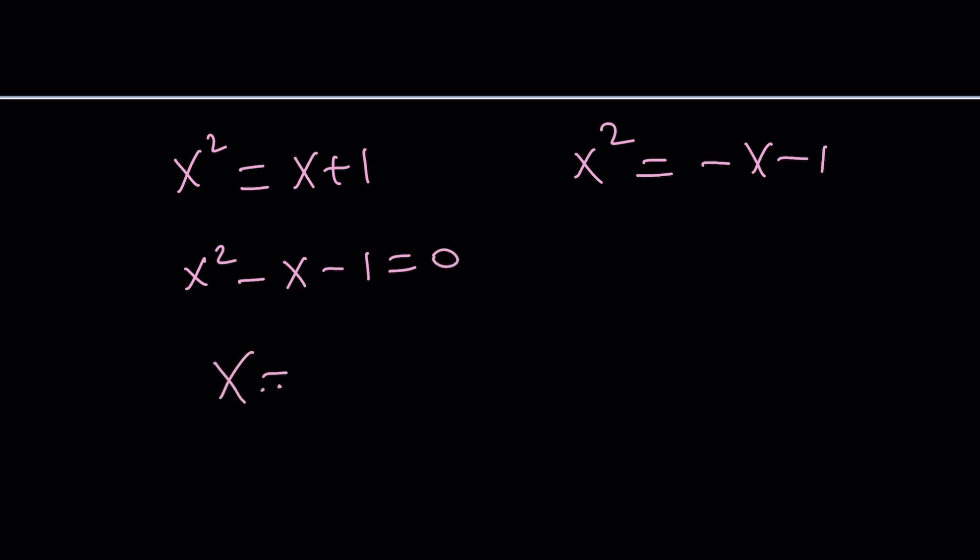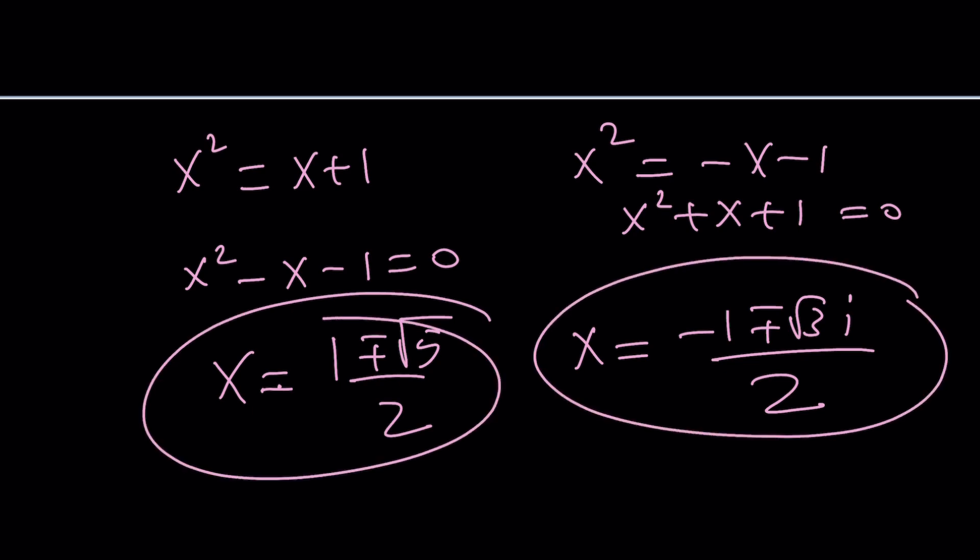x equals negative b plus minus the square root of 5 divided by 2. Notice that. The other one is going to give you complex solutions. Those are going to be the cube roots of 1. Negative b plus minus the square root of b squared minus 4. That's going to be root 3i divided by 2. So we have four solutions, but only two of them are real.